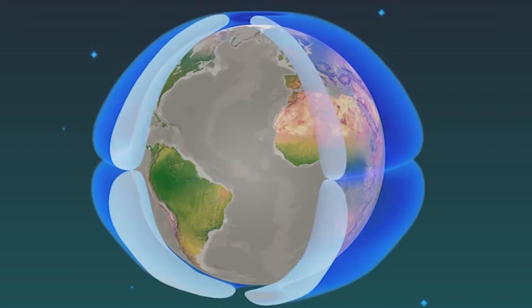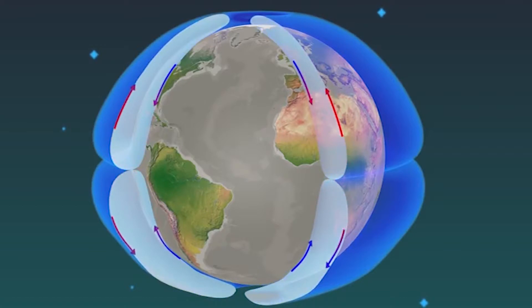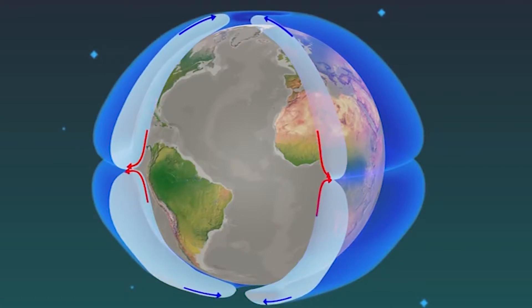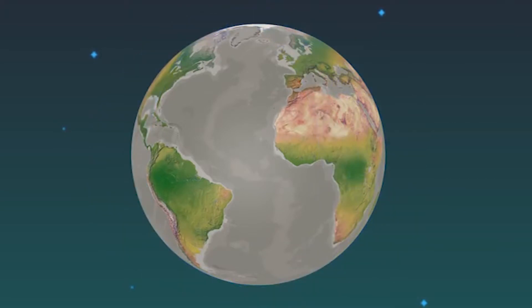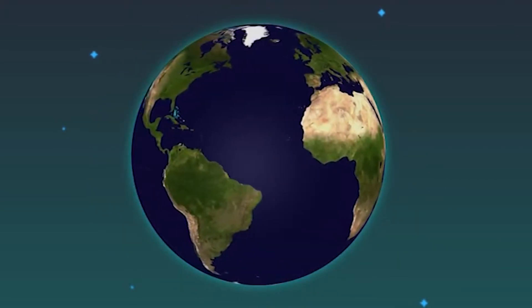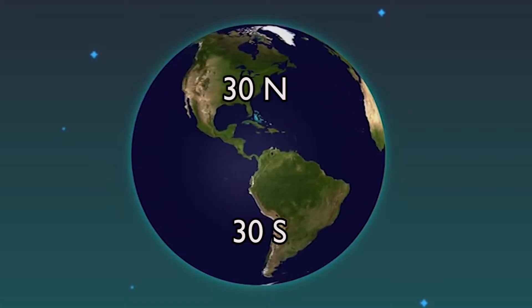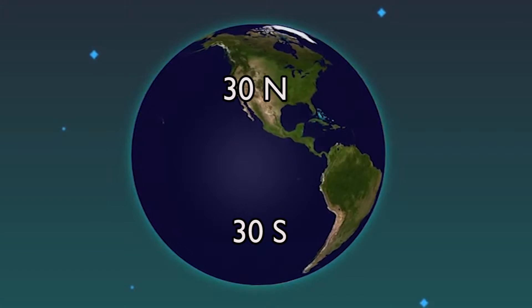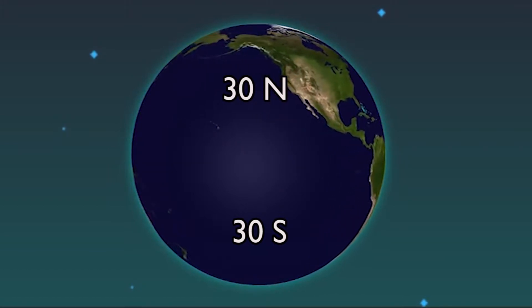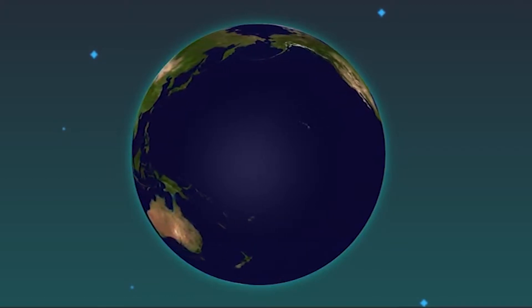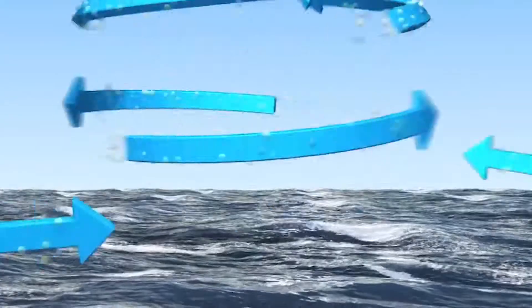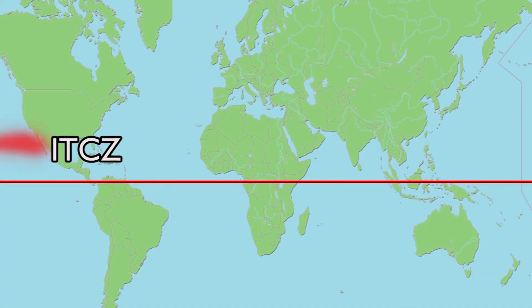On Venus, which does not rotate fast enough to produce appreciable Coriolis effect, this is in fact what happens. On Earth, however, Coriolis makes the situation more complicated. Air rises near the equator, but rather than flowing all the way to the poles, Coriolis forces air to sink at about 30 degrees north and south latitudes. This vertical motion in the tropics is so well-defined that it is called the Hadley Cell. Rising air in the Hadley Cell along the equator produces deep clouds, thunderstorms, and rain in a band of low pressure called the Inter-Tropical Convergence Zone, or ITCZ.